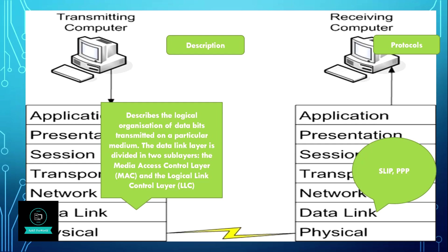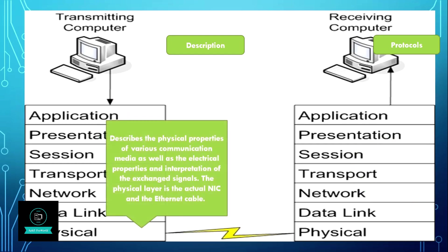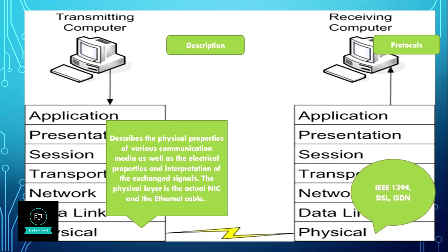The first layer is the physical layer. It describes the physical properties of various communication media as well as the electrical properties and the interpretation of the exchanged signals. The physical layer is the actual NIC and ethernet cable. It works on protocols such as IEEE 1394, DSL, and ISDN.